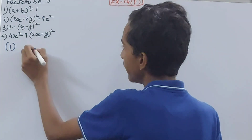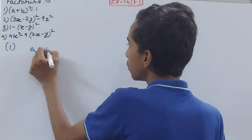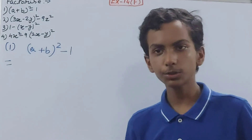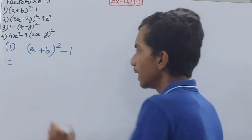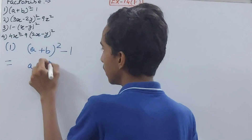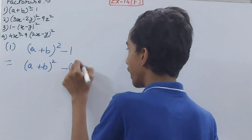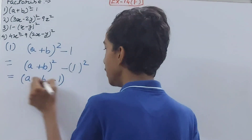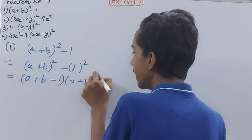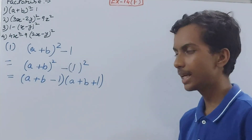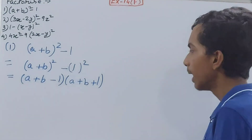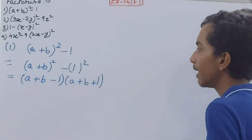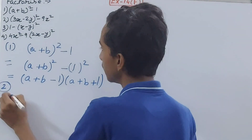The first part is (a + b)² - 1. Most of the mistakes we make here is that we open this bracket, but we are not supposed to. You write this as (a + b)² - 1², which gives (a + b - 1)(a + b + 1). It is the same identity a² - b² = (a + b)(a - b), but a slightly more difficult version.